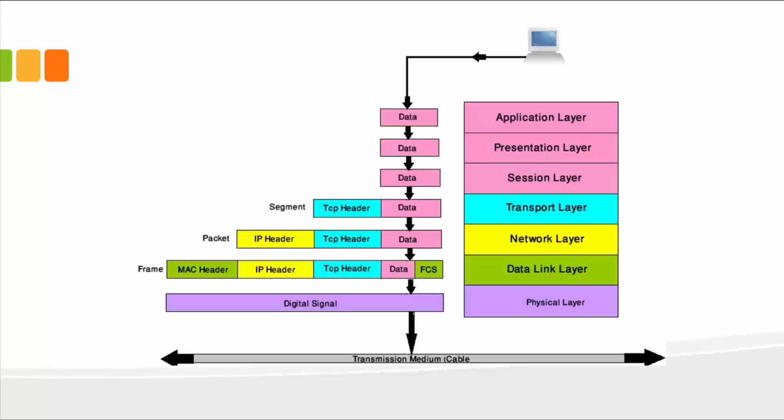So when a computer sends some data to another computer, obviously the medium of transmission is the cable or the wireless. So the data travels directly from the computer and passes through each of these layers.